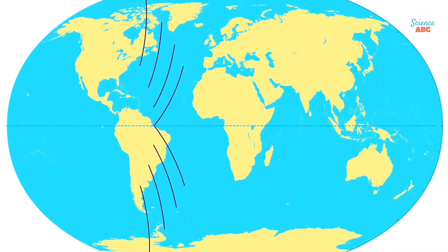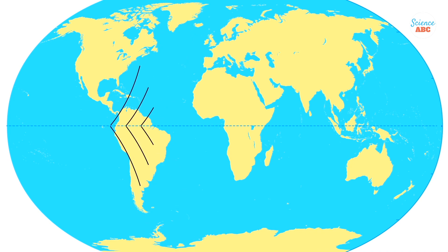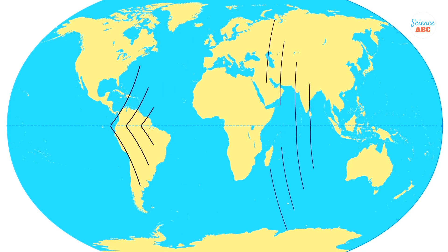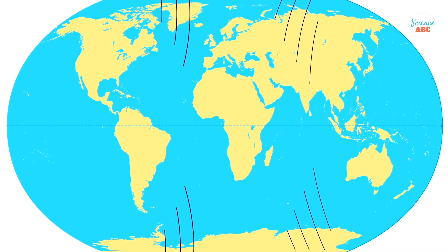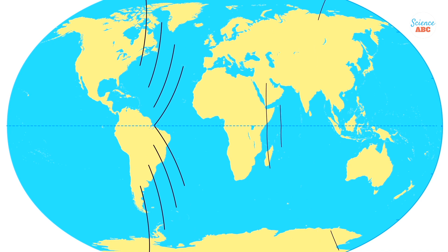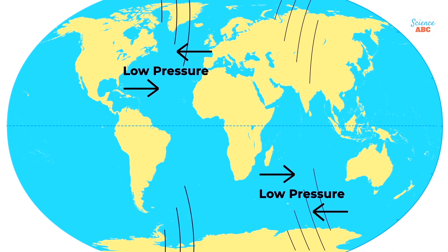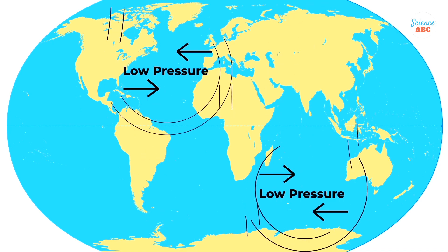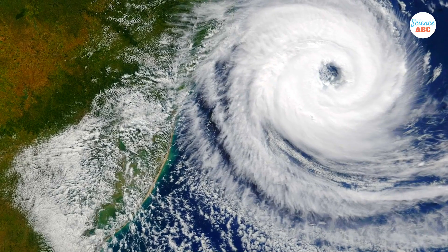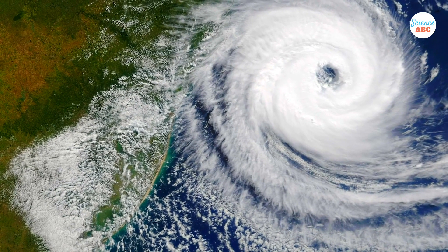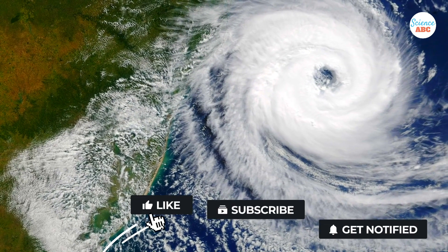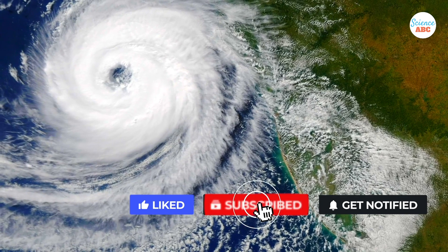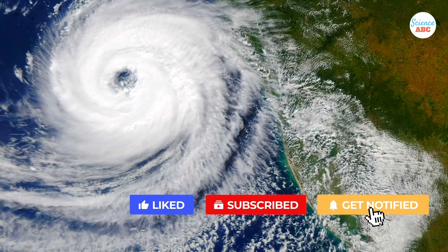In both hemispheres, winds traveling towards the equator are diverted towards the west, while winds traveling towards the poles will curve eastward. But due to the presence of low-pressure zones, these winds follow a circular path. This is why cyclones and hurricanes in the northern hemisphere spin counterclockwise, whereas those in the southern hemisphere spin clockwise.